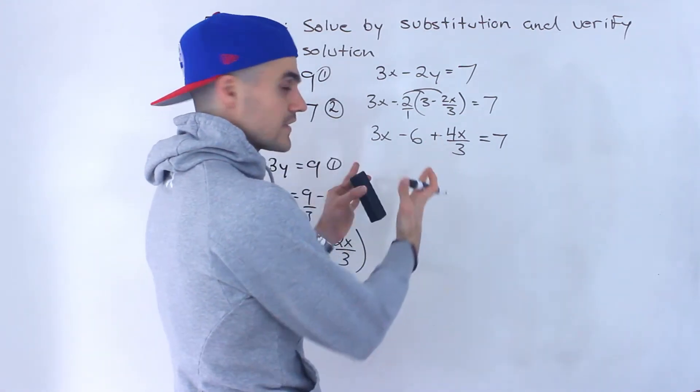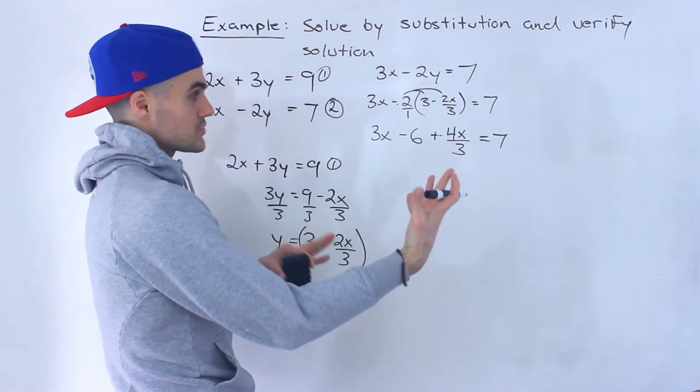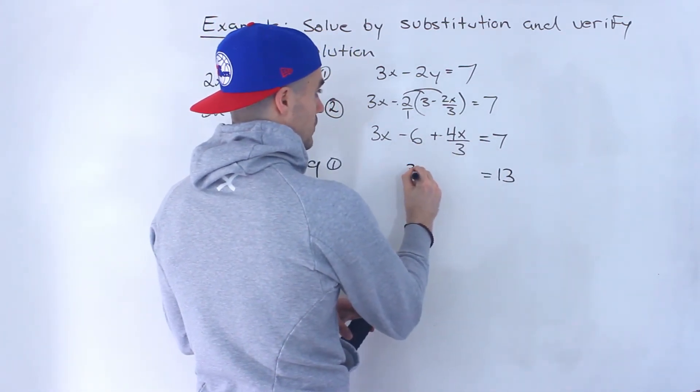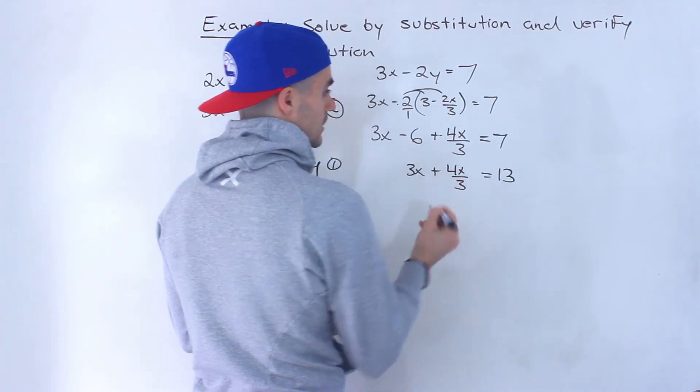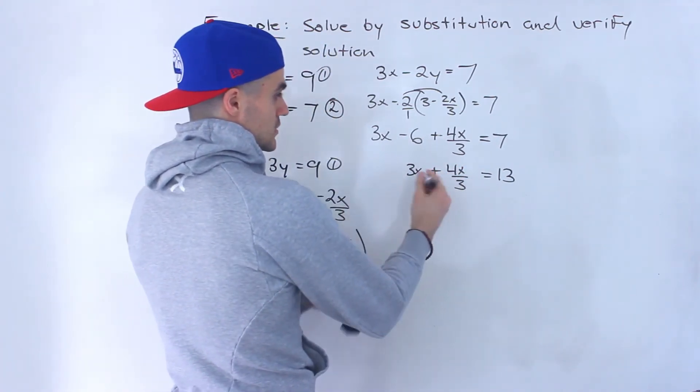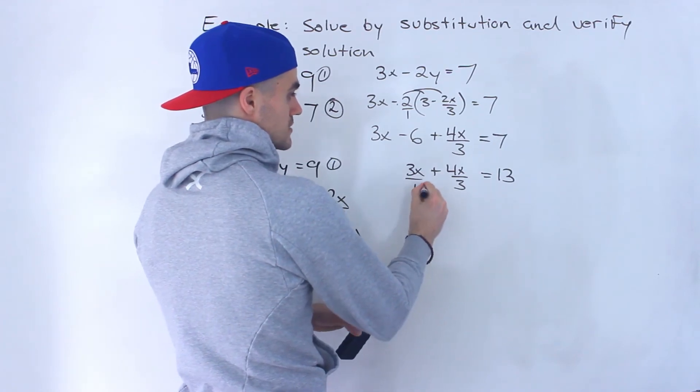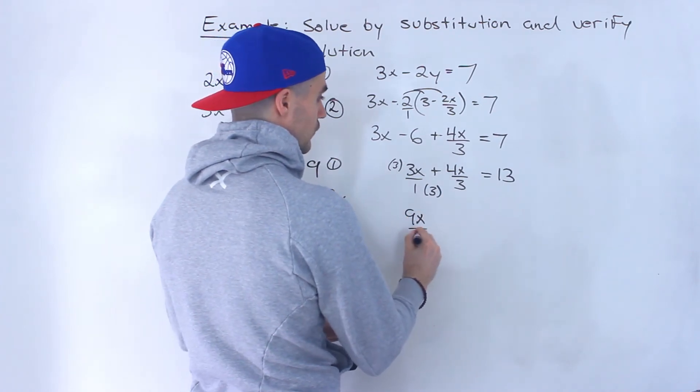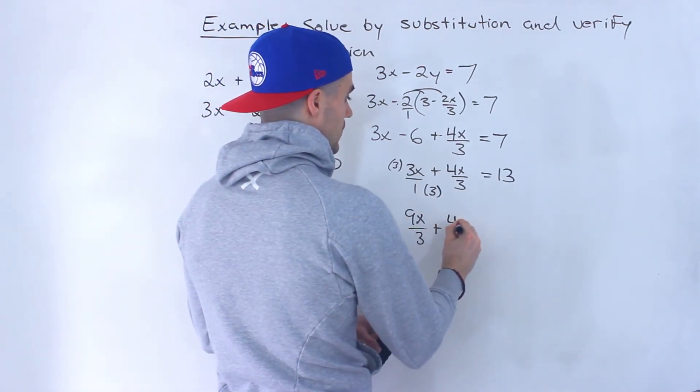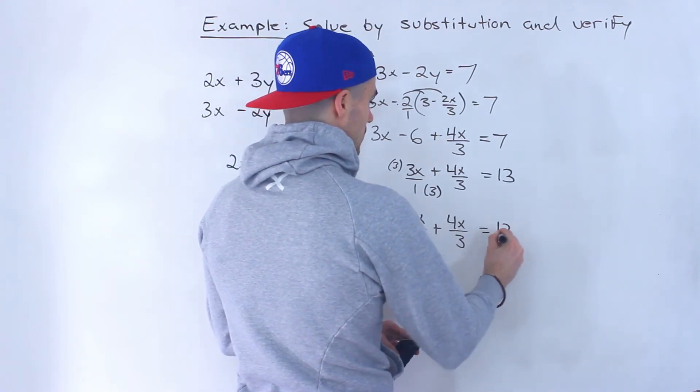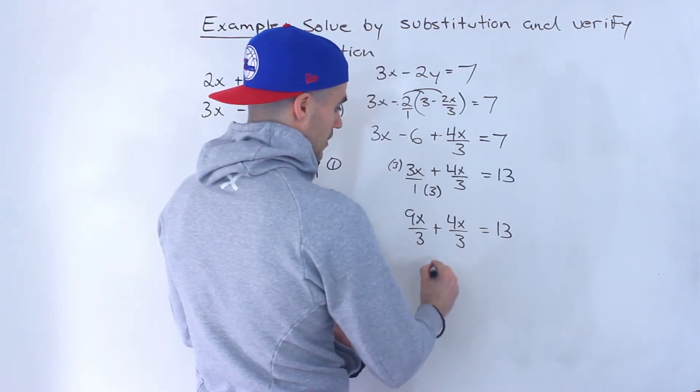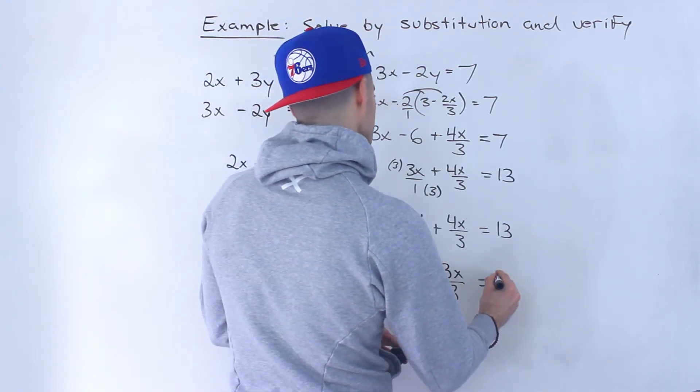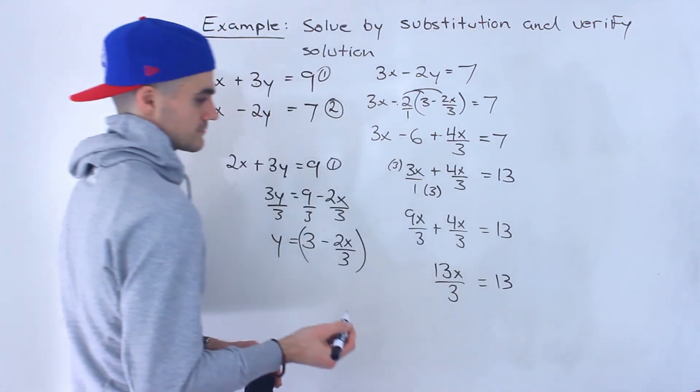So now what I'm going to do is I'm going to keep all the x's on one side, bring all the numbers to the other. So negative 6 I'm going to bring over. 7 plus 6 gives us 13. Then I'm going to have 3x plus 4x over 3, like that. And then I'm going to combine these into 1. This 3 is like over 1. So if I multiply this by 3, multiply this by 3 to get a common denominator, I'll have 9x over 3 plus 4x over 3 equals 13. So notice this here would end up being 13x over 3, like that.